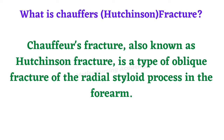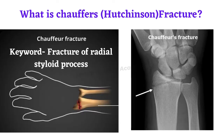Hutchinson fracture is also called chauffeur's fracture. It is a type of oblique fracture located at the radial styloid process in the forearm. You can see in the image the radius and ulnar bones, with the oblique fracture present at the radial styloid process near the wrist. This type of fracture is called Hutchinson or chauffeur's fracture.